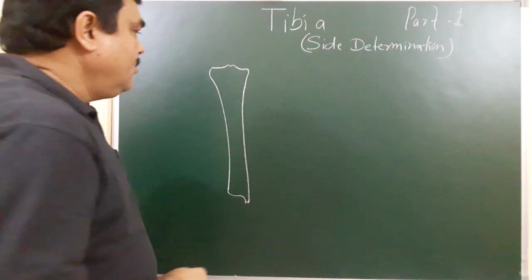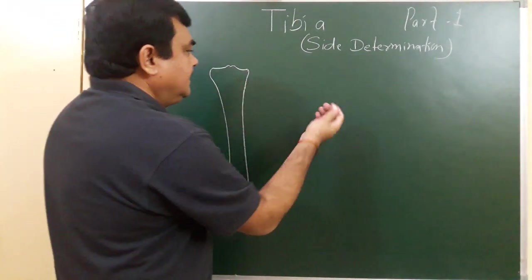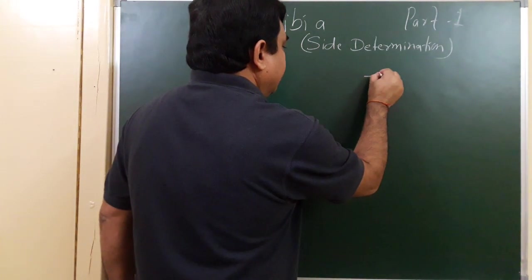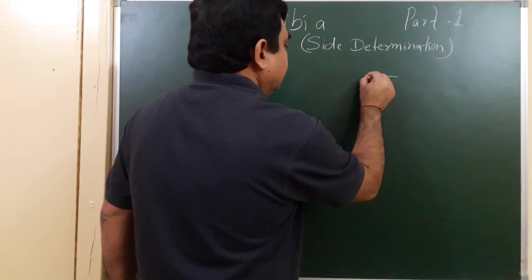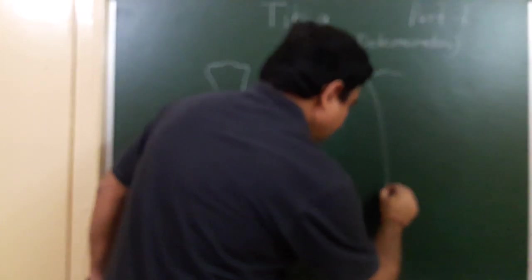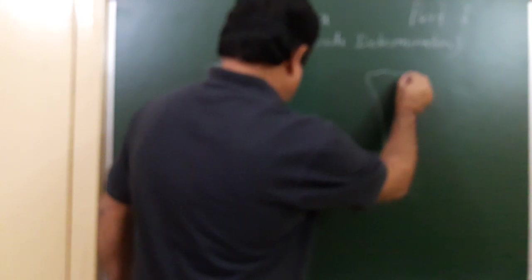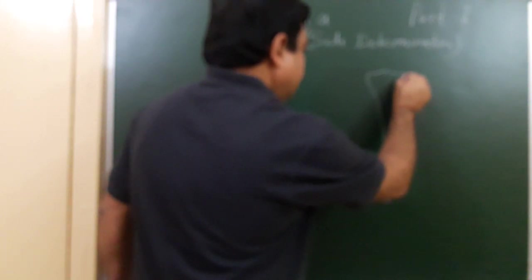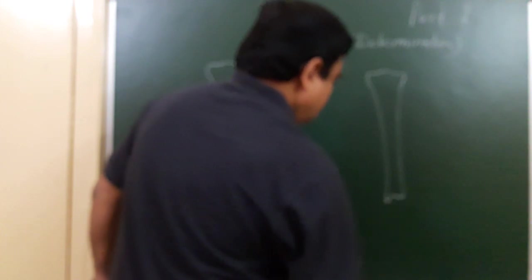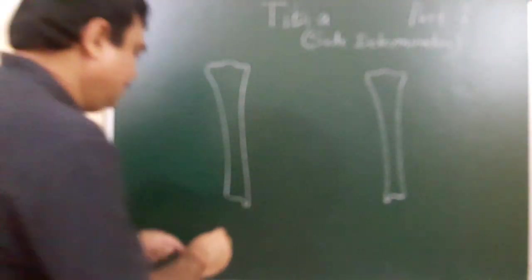This is the anterior view of the tibia. Turning it like this, this is the posterior view of the tibia.